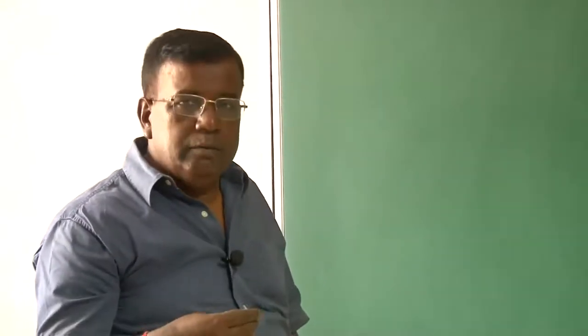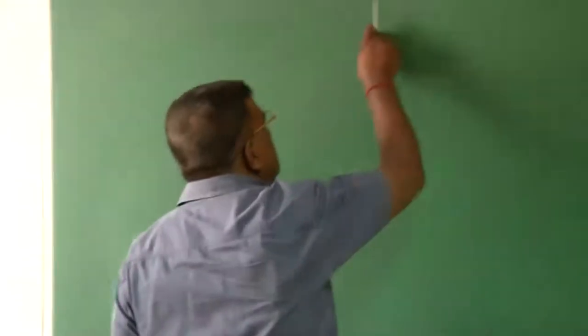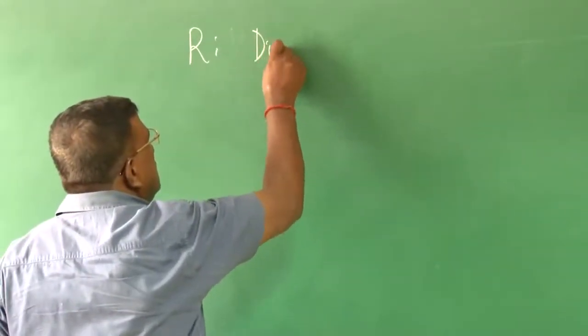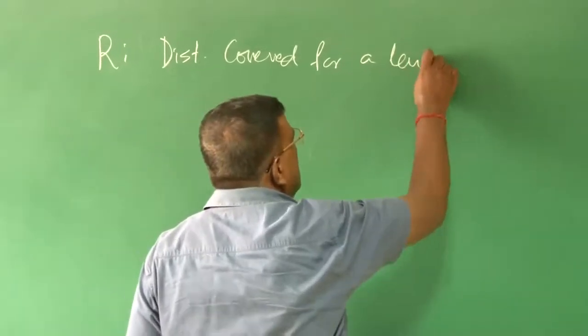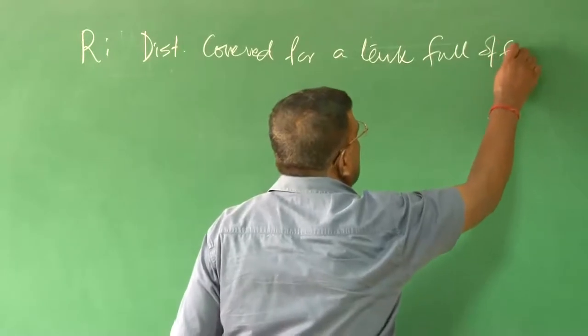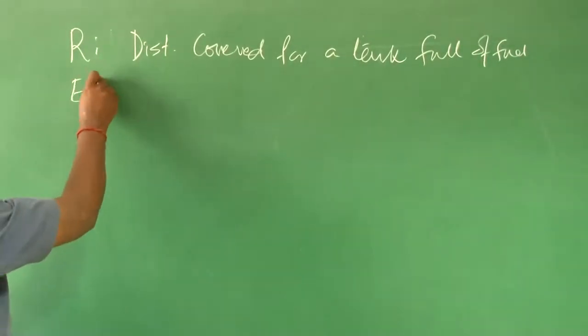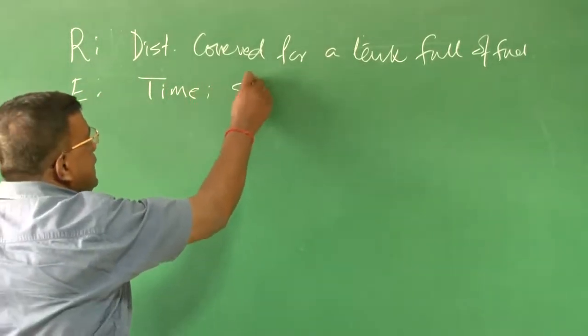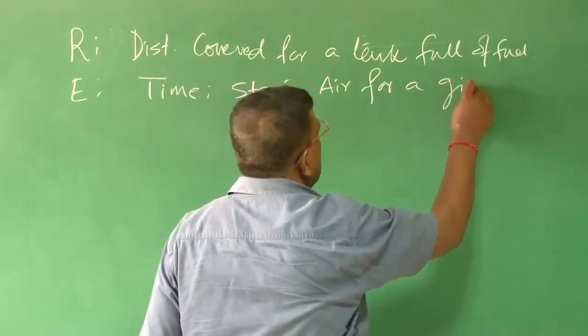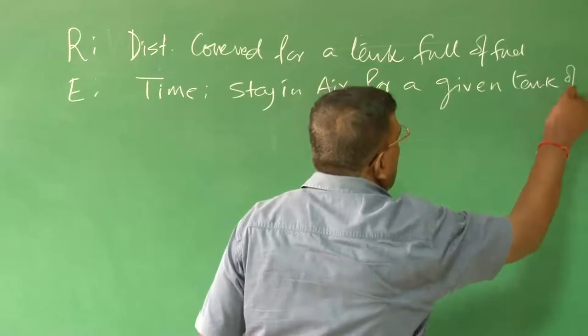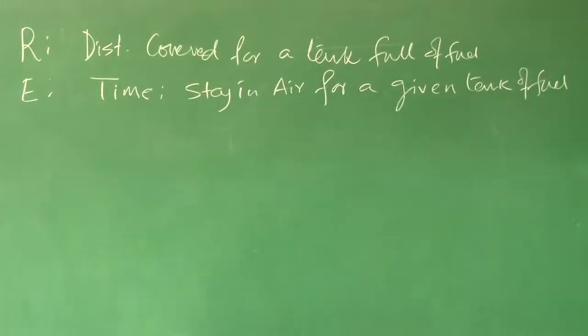If I recall, what is the definition of range? When I talk about range it means the ground distance the airplane will cover for a given tank full of fuel. Range is the distance covered for a tank full of fuel. Endurance is the time stayed in air, again for a given tank of fuel. This is the basic definition we all understand.